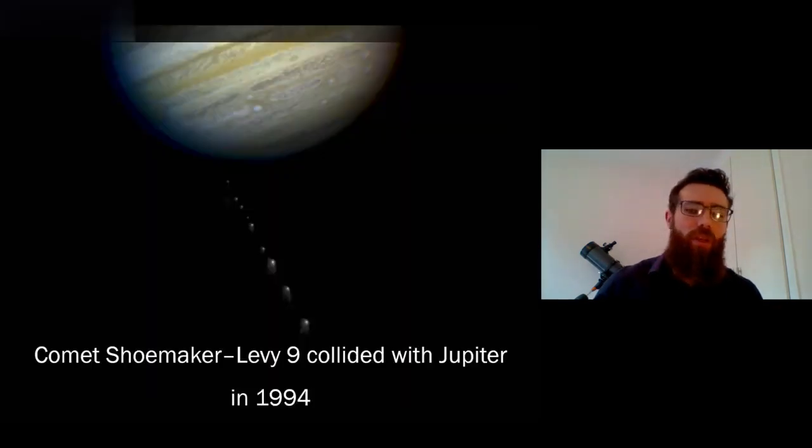So in 1994, Comet Shoemaker-Levy 9 collided with Jupiter and lots of people, lots of amateur astronomers were able to watch this. It was quite a spectacular event and here you've got that comet being pulled apart into various different pieces, so the tidal forces from Jupiter as that comet approached pulled it all to pieces and then it impacted Jupiter.